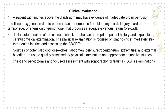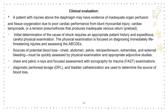Chest and pelvic X-ray and FAST protocol need to be done. Diagnostic peritoneal lavage and blood calculation are used to determine the source of blood loss. If you see bruising and hematomas in the perineal area, this may indicate urethral injuries and contraindicates insertion of a transurethral catheter before radiographic confirmation of an intact urethra. During catheterization of the bladder, hematuria can be a sign of injury in that region.